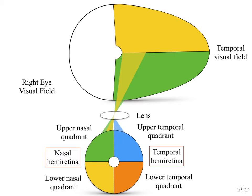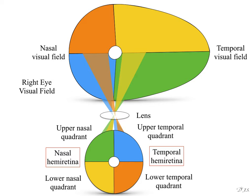The upper temporal quadrant looks toward the lower nasal quadrant of the right eye visual field, and the lower temporal quadrant looks at the upper nasal quadrant of the right eye visual field. The temporal hemiretina looks at the nasal field of the right eye visual field. The central wide circle in the retinal diagram represents the macular region, corresponding to the central area of the right eye visual field.